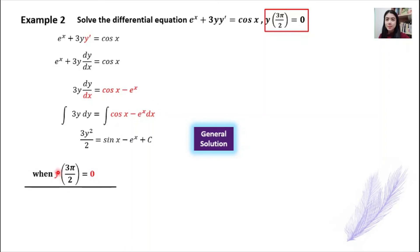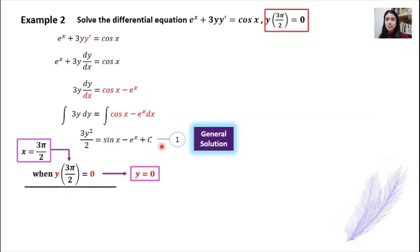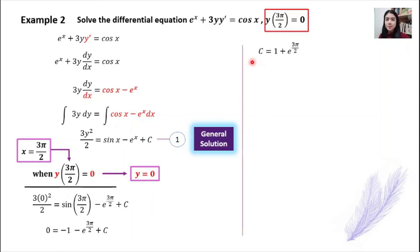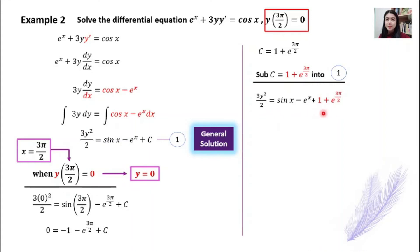When y(3π/2) = 0, it means x = 3π/2 and y = 0. Substitute these values of x and y into the general solution. On the left-hand side you get 0. On the right-hand side, sine(3π/2) gives negative 1. Simplifying gives us the value of c. Since we now know the value of c, substitute it back into the general solution to obtain the particular solution. We call it a particular solution because we know the value of c, unlike the general solution where c is unknown.